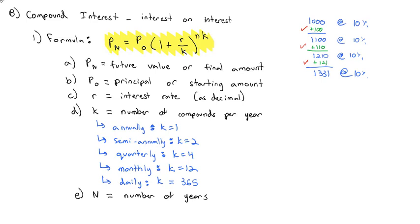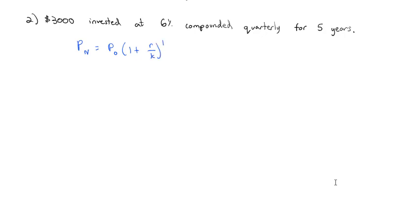So let's take a look at a couple examples where we're using the compound interest formula. We're going to start with $3,000 invested at 6% compounded quarterly for five years. So we've got our formula that P_n is equal to P_0 times 1 plus R over K, all to that NK power.